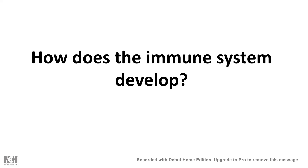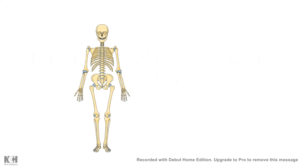I have videos for each of those cell types separately, so you can watch all of them — the links are provided in the description, and the whole playlist has a collection of all the different cell types and important information about them. The major site for development of the immune system is our bone marrow.